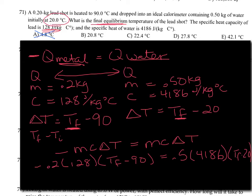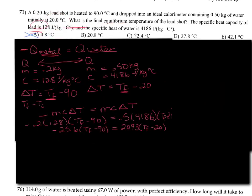20.8, maybe. 22.4, maybe. So we'll have to solve this to figure it out. Doing a little simplifying: 0.2 times 128 is negative 25.6. 0.5 times 4186 is 2093. Go ahead and distribute negative 25.6 T_F.